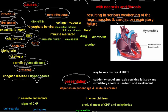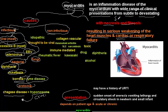Fungi can cause myocarditis. Protozoa can also cause myocarditis — Chagas disease caused by Trypanosoma cruzi is an important cause of myocarditis. So to summarize infectious causes: viral infection is most important with Coxsackie B, then bacterial, fungal, and protozoal infections — remember Lyme disease and Chagas disease.